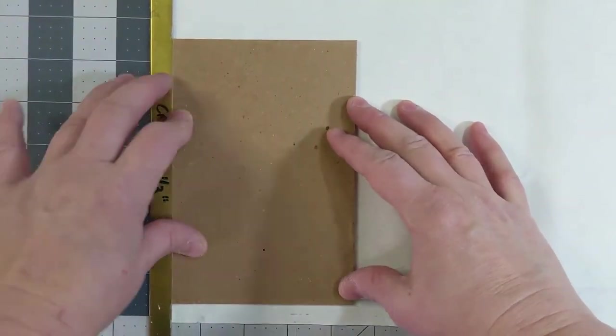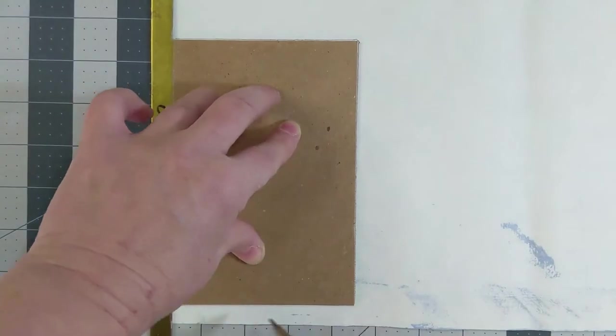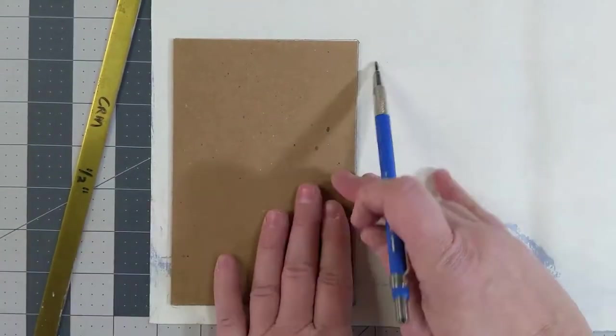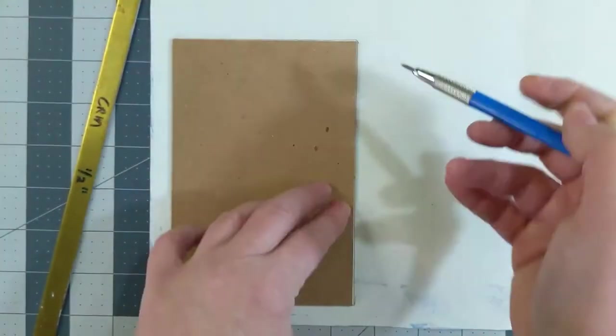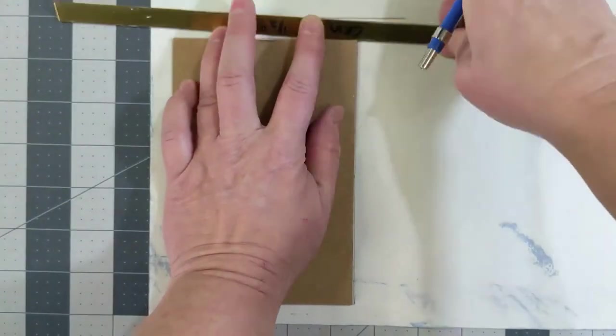Now you need to measure your cover paper for your boards. What I like to do is put it in the corner and take my half inch brass strip along the edge to measure so I have a half an inch all the way around my boards and mark that.